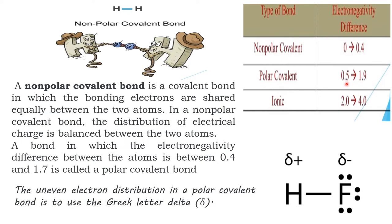Covalent bonds could be of two types: polar covalent bonds and nonpolar covalent bonds. The uneven electron distribution in a polar covalent bond is designated by delta minus (δ⁻) or delta positive (δ⁺).